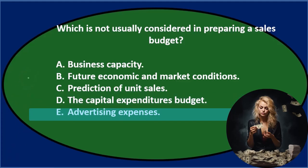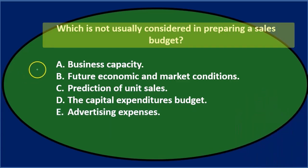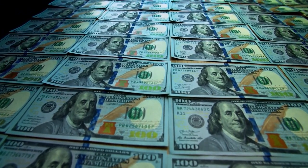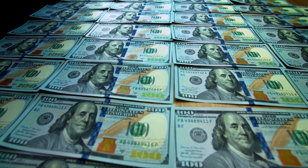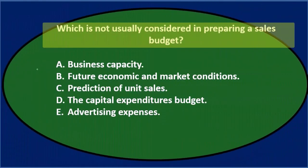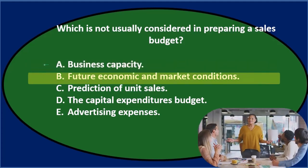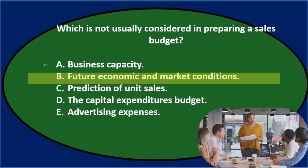Let's go through this again using the process of elimination — which is not usually considered in preparing a sales budget? The sales budget is at the top of the budgeting process, one of the first things we start. We want sales to be as high as possible. A. Business Capacity — how much can we sell? That sounds reasonable. B. Future Economic and Market Conditions — we're going to think of last year's numbers and then consider future economic conditions. That's something we will consider.